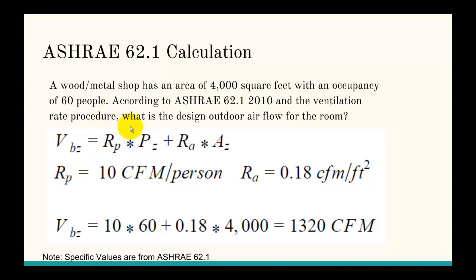We look up in the table in ASHRAE 62.1 for a wood metal shop these two parameters, the R_p and the R_a. Those are given in ASHRAE 62.1. Then we take that there's 60 people so that's going to be P_z and 4,000 square feet is going to be the area A_z. We do the calculation and we get 1,320 CFM.